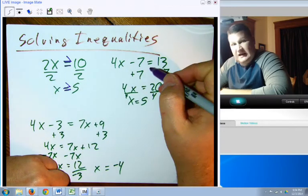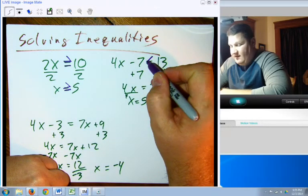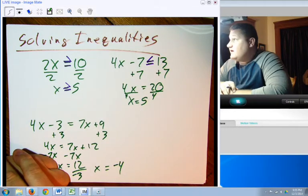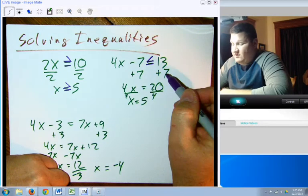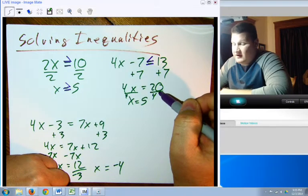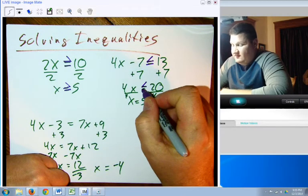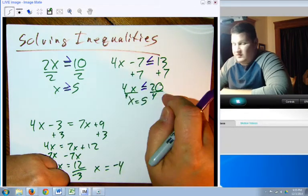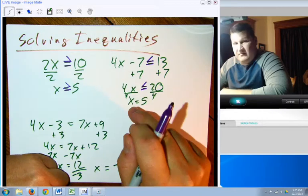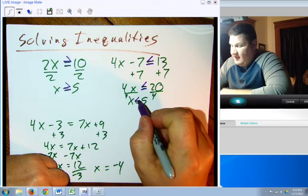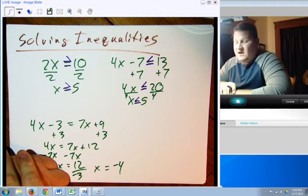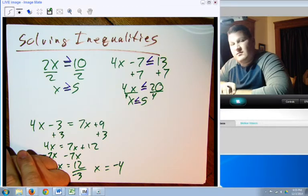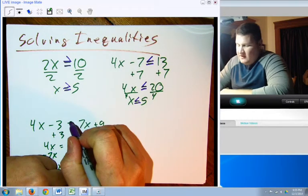Over here, let's say I have less than or equal, so 4x minus 7 is less than or equal to 13. I'm still going to add 7 to both sides, it's still going to give me 20. It's just 4x is now less than or equal to 20. I divide both sides by 4, and I come up with x is less than or equal to 5. In fact, there's only one time in the world that we actually change it.